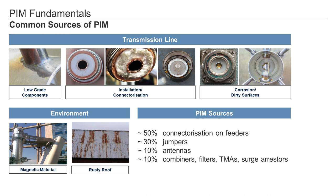Any connected transmission line components — such as connectors, cables, jumpers, combiners, TMAs, antennas, etc. — are a potential source of PIM. What is most important is that the installation carried out by an installation team is ultimately a low PIM installation, which ensures high network quality.